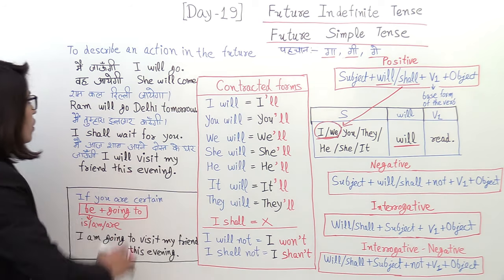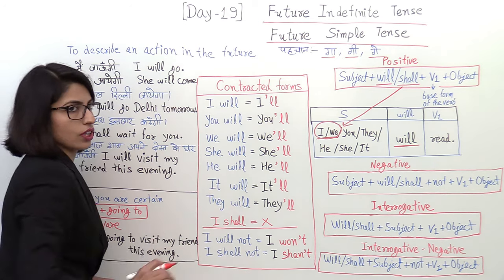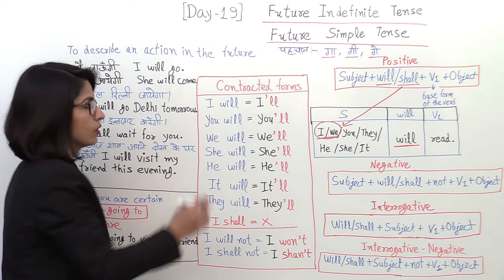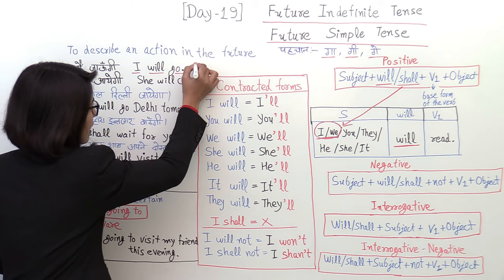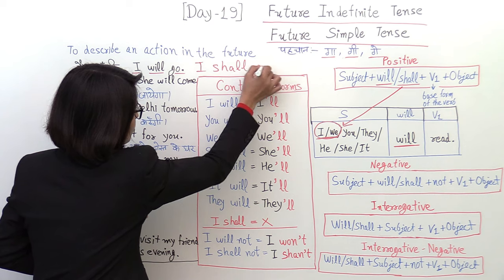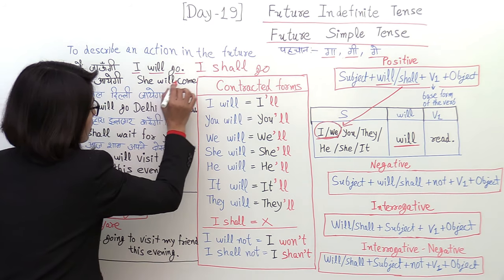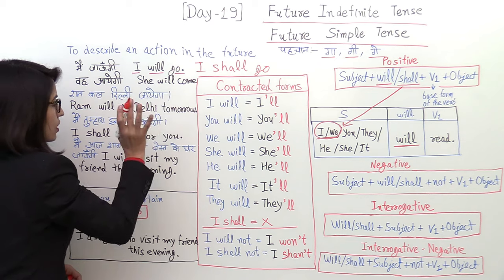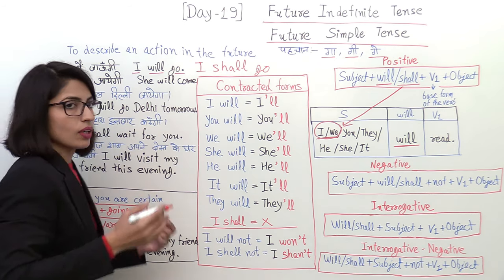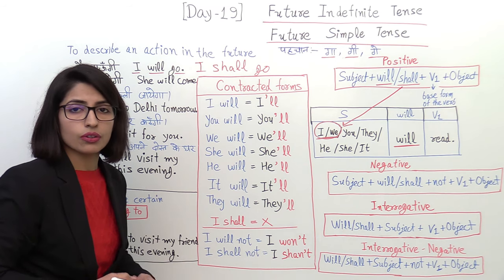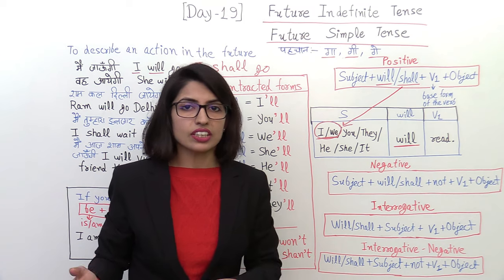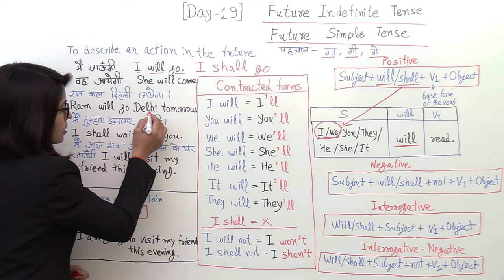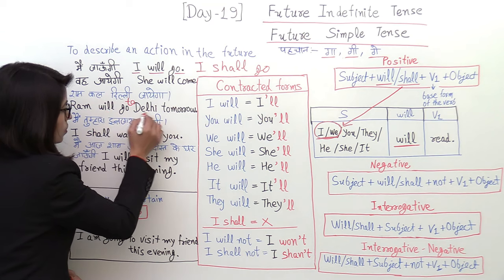Now, let's see some examples. To describe an action in the future, we can use sentences in future. I will go. I shall go. She will come. I will go to Delhi. I will go to Delhi tomorrow.